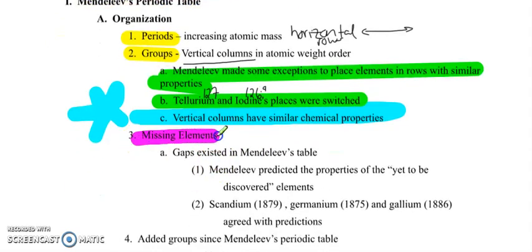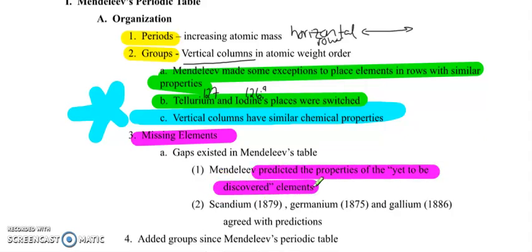Here is where Mendeleev's genius lays. He left room for missing elements. He left gaps in his table, and he actually even predicted the properties of those yet-to-be-discovered elements. He told all the other scientists, you just haven't worked hard enough yet. If you keep looking, you will find elements with these properties, x, y, and z, whatever those could be.